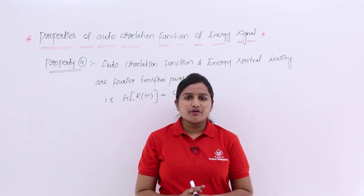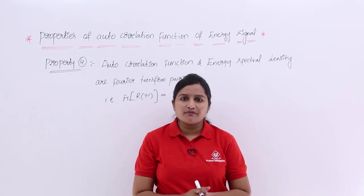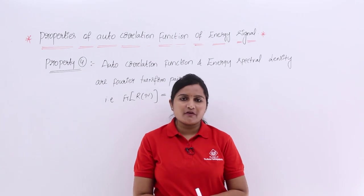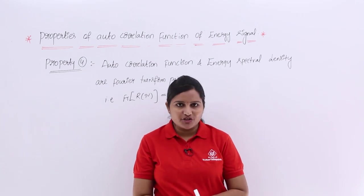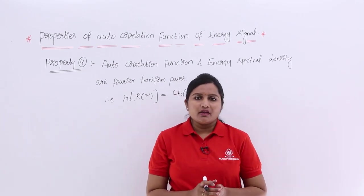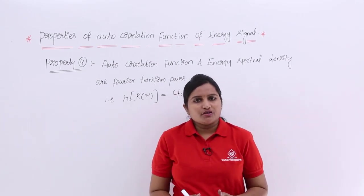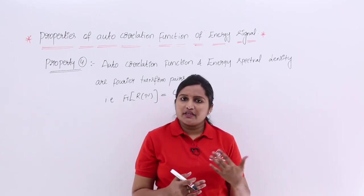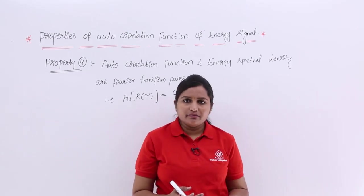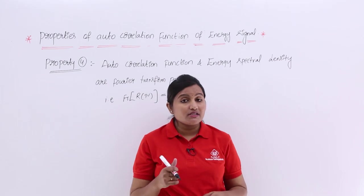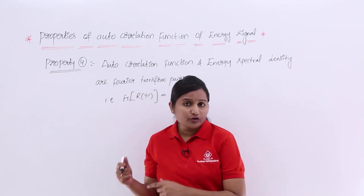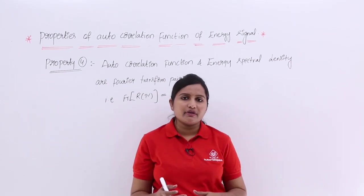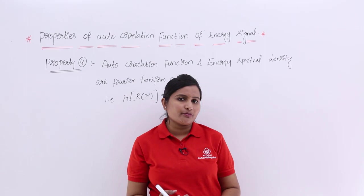In this video we are going to discuss the final property of the autocorrelation function of an energy signal. The fourth property of the autocorrelation function is one of the spectral properties, which we discussed earlier under spectral properties.